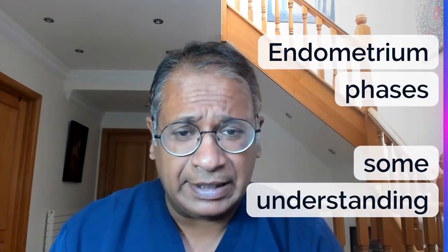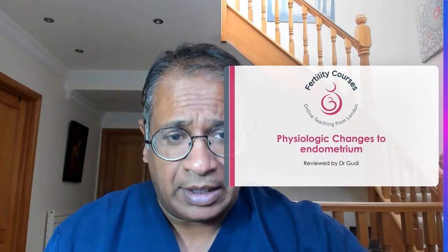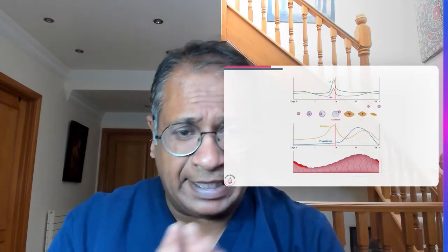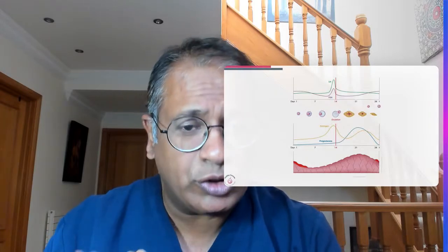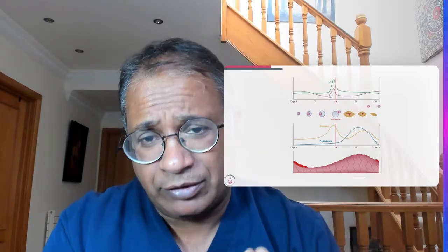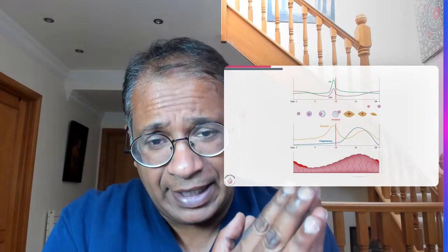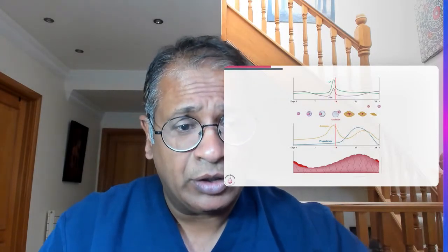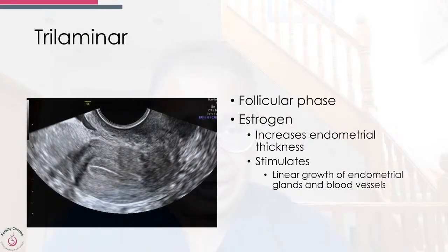To understand how the endometrium changes, we divide the cycle into the follicular phase and the luteal phase. In the follicular phase, the endometrium starts developing in response to estrogen. The second part is the luteal phase, where the progesterone effect begins and pregnancy may start developing. The question is: why do we get a trilaminar appearance, and that occurs in the follicular phase.